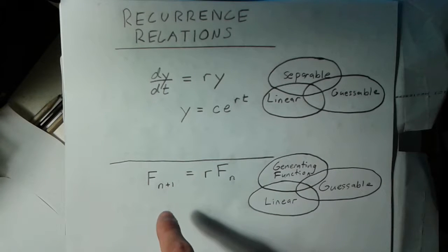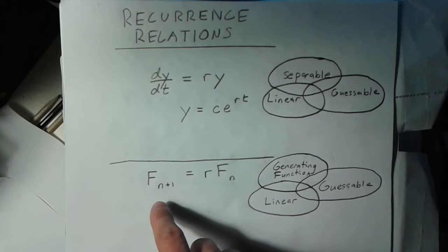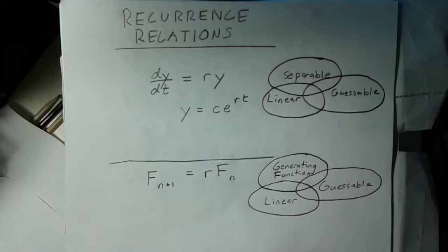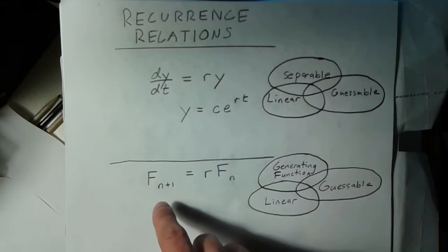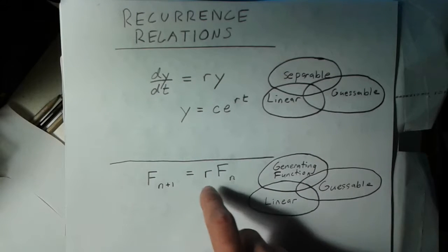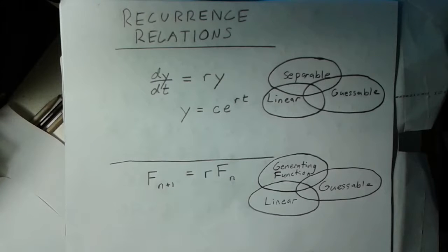Similarly, with a recurrence relation, we have a function of a discrete variable, this time n, which is defined recursively. So instead of saying f of n is equal to some function, we say, for example, the n plus 1th term is equal to r times the nth term.